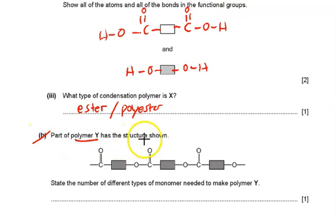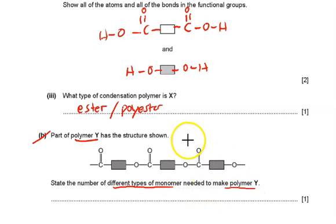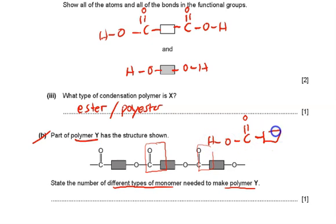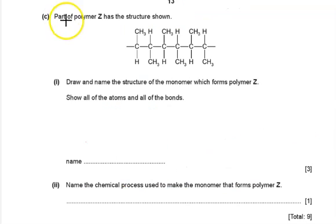Part of polymer Y has a structure shown. The question asks for the number of different types of monomer needed to make polymer Y. Looking at the structure, the carbon is attached to only one side of the black-colored box, so most probably the structure involves only one type of monomer — the answer is one type. For polymer Z, the question asks to draw and name the structure of the monomer which forms it.